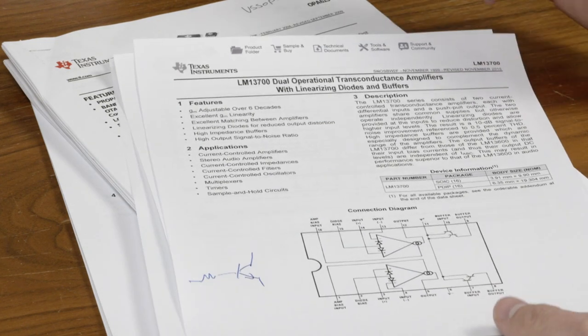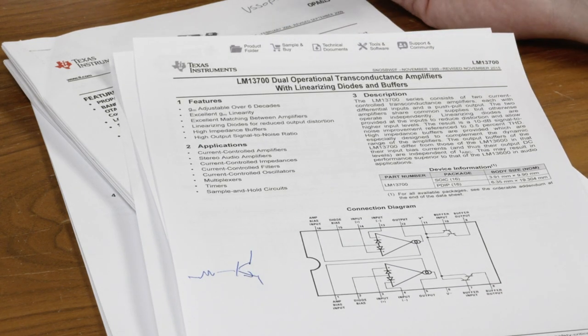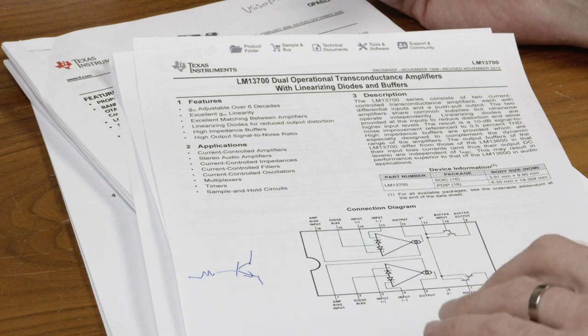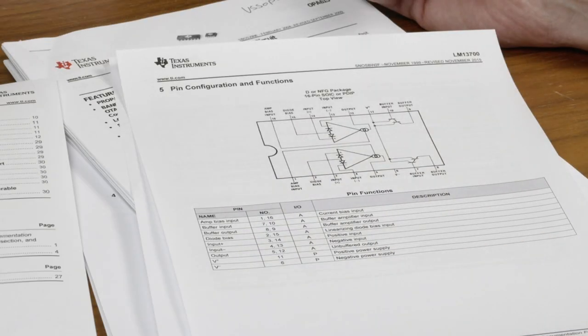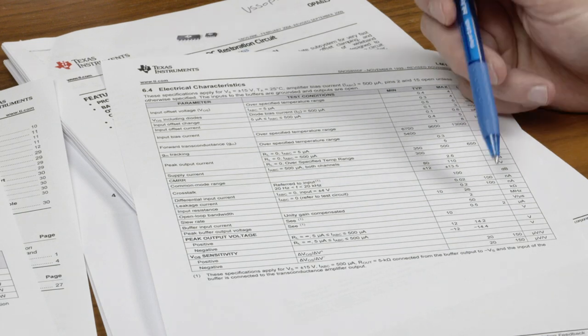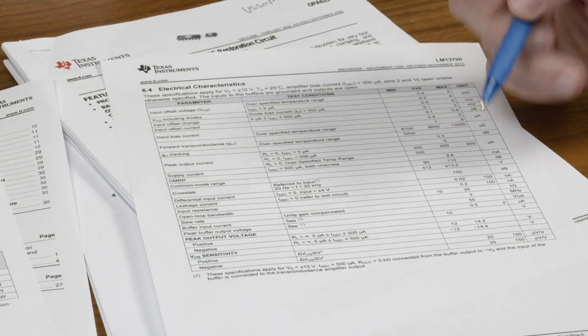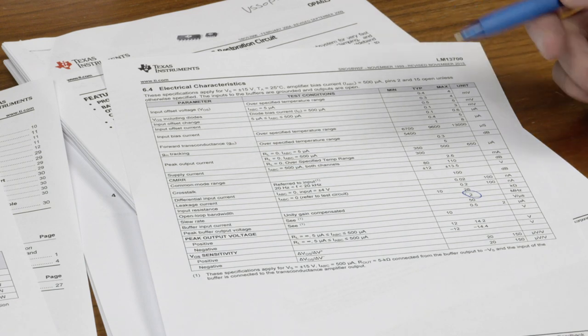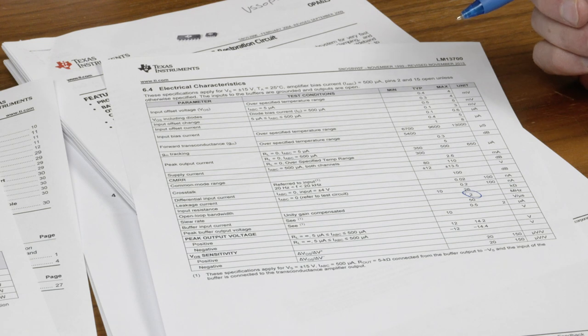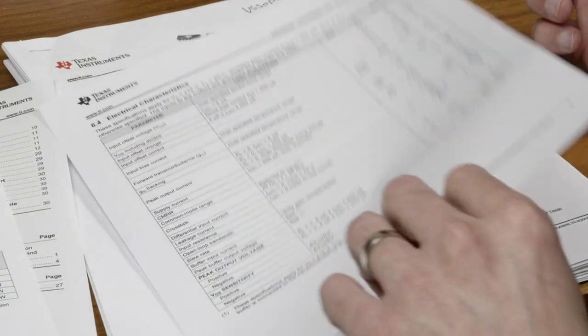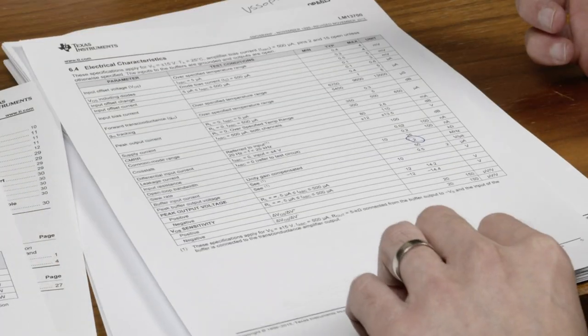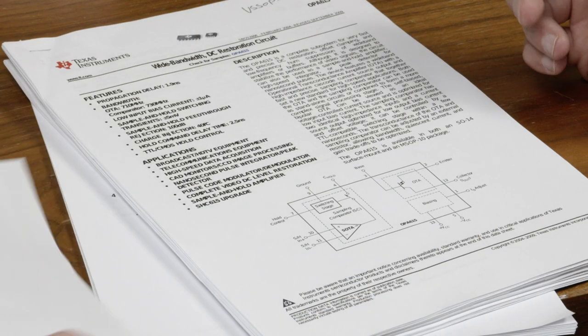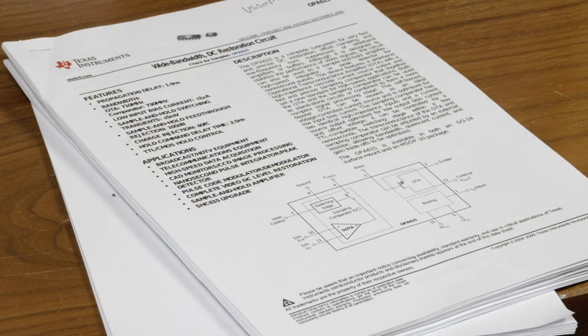So why am I not using this part for video? This is an 89 cent part I just checked online. The reason why you don't use it for video is here it has an open loop bandwidth of 2 MHz. Very good for audio applications, not good for video applications. Just as a reminder, PAL is like 4.5 MHz pixel clock. So it's not going to do PAL. It's definitely not going to do HD video. So that's where you get into chips like this.